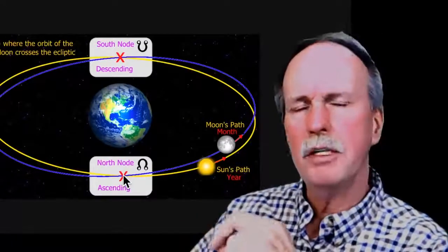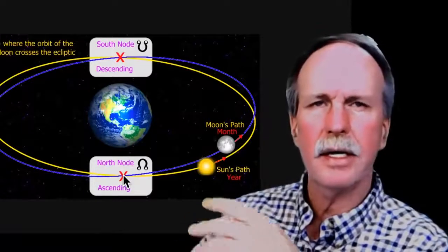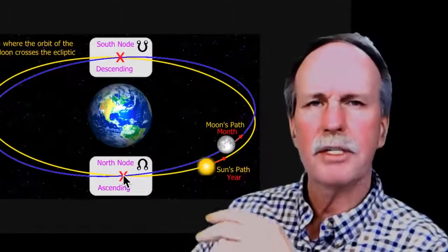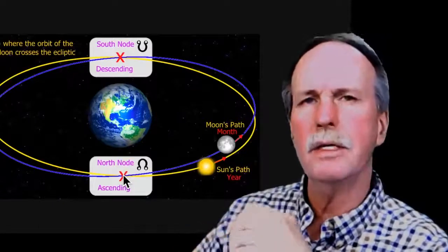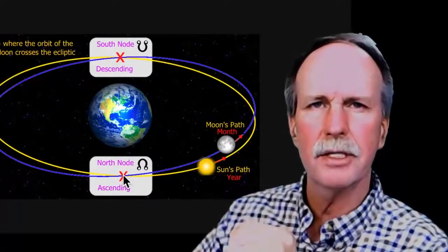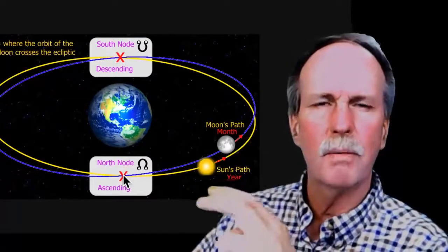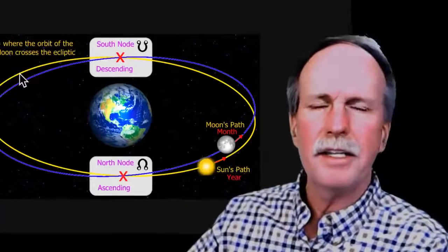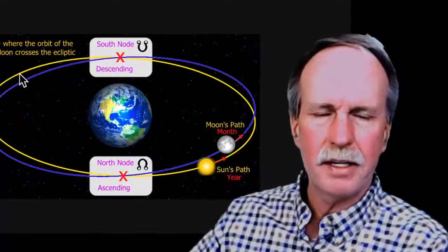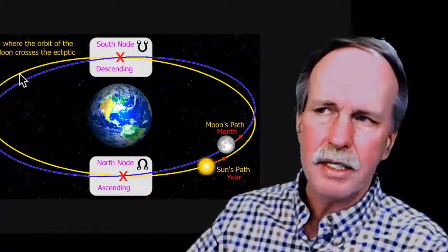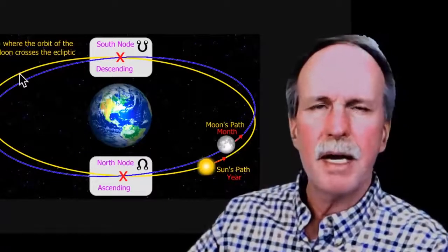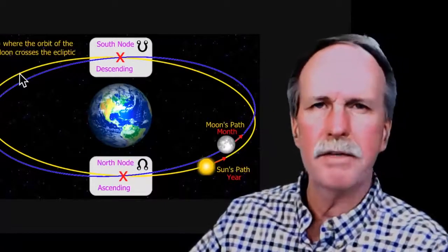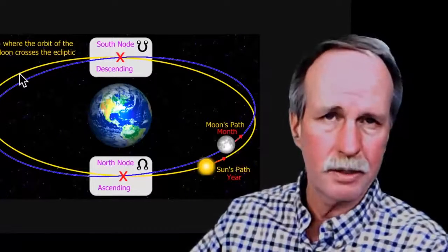If you multiply these all together and find a common denominator, it's going to take between 230 and 260 of these cycles to form one Saros cycle. Some people suggested I should clarify this to avoid confusion in certain groups.